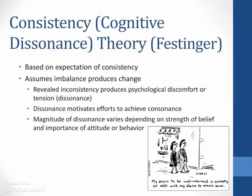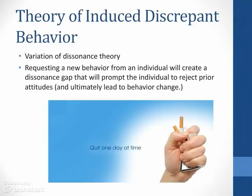Like most theories we've discussed, there is a potential problem with cognitive dissonance theory. Due to our capacity for compartmentalization, we sometimes bypass this whole theory by simply denying that there's dissonance in our lives. Denial is then what we use to reconcile — without actually reconciling — our discrepant attitudes. An interesting variation is the theory of induced discrepant behavior, in which requesting a new behavior from an individual is expected to create a dissonance gap that prompts the individual to reject their prior attitudes and ultimately make a behavior change. When we willingly take on a new behavior, it actually becomes part of our identity, and we can use that to replace older attitudes that no longer match the new behavior.